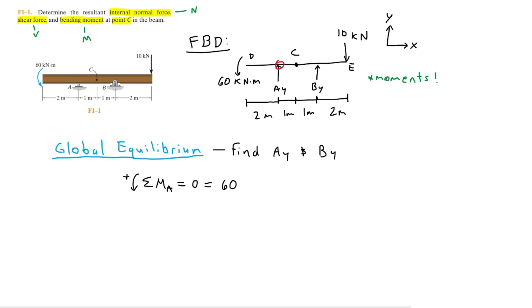To the right, we have the force BY. For my drawing, this is also positive, following the right hand rule. So we have plus BY times the distance between A and B, which is two meters.